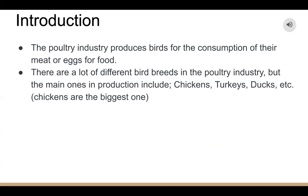The poultry industry produces birds for the consumption of their meat or eggs for food. There are a lot of different bird breeds in the poultry industry, but the main ones in production include chickens, turkeys, ducks, and more — but chickens are the biggest one.